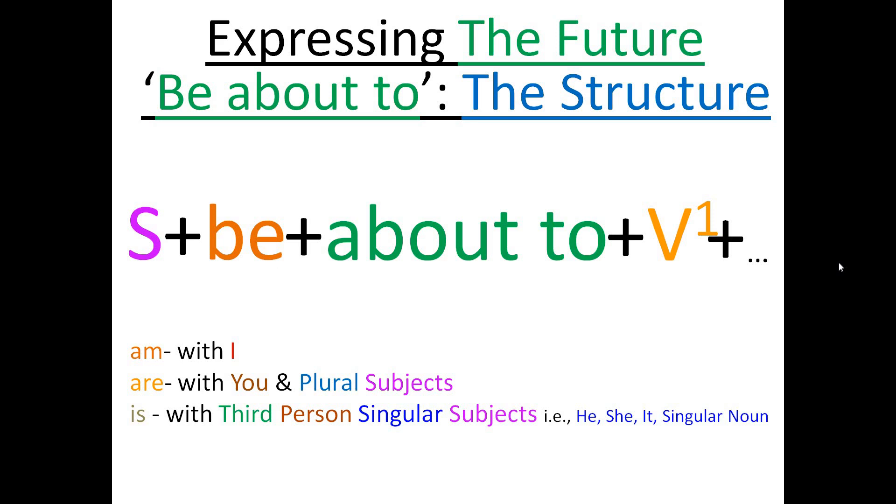For example, I am about to read this book. She is about to come. Now let's see how about to is used to express the future.